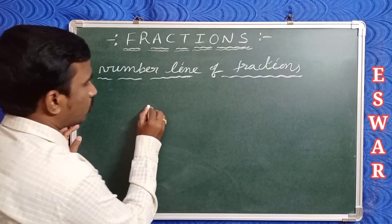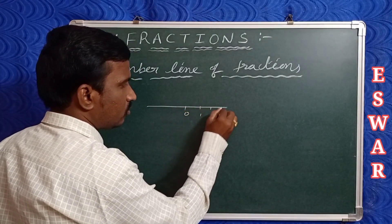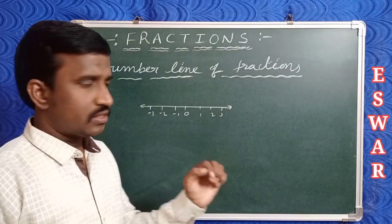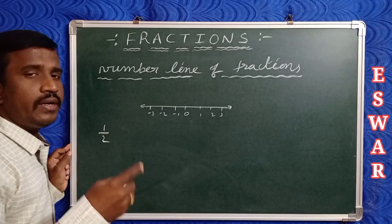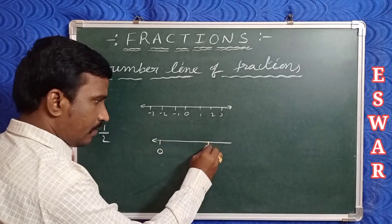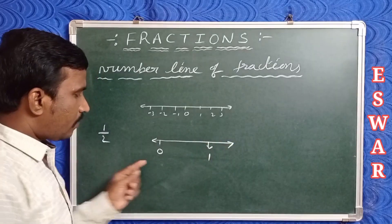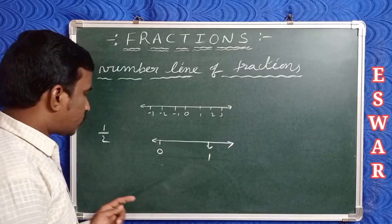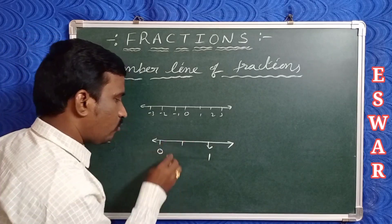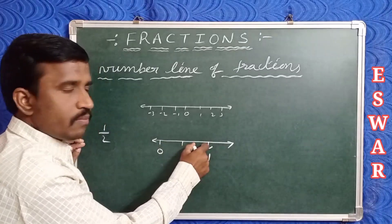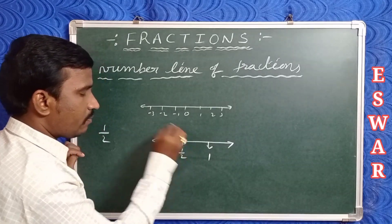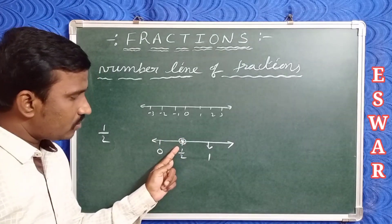Now let's check representation of fractions on a number line. On a number line of integers we have 0, 1, 2, 3 and minus 1, minus 2, minus 3, and so on. Similarly, to represent one by two on a number line: the first point is 0, the second is 1. Divide 0 to 1 into two equal parts — the first part indicates the point one by two. So one by two lies between 0 and 1.